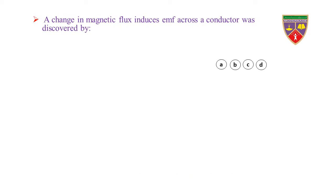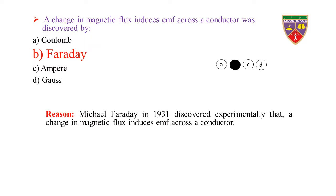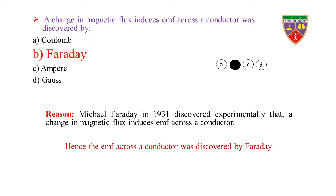Question: A change in magnetic flux induces EMF across a conductor — this was discovered by option A: Coulomb, option B: Faraday, option C: Ampere, option D: Gauss. The key is Faraday, therefore the correct option is B. Reason: Michael Faraday in 1831 discovered experimentally that a change in magnetic flux induces EMF across a conductor.